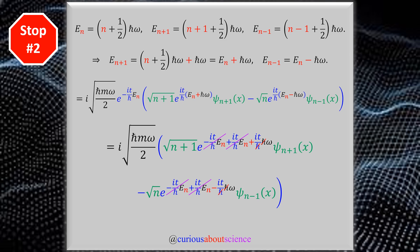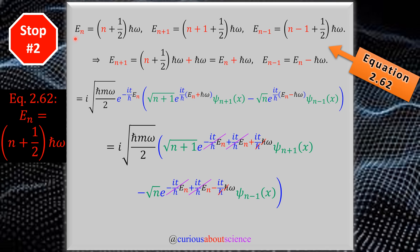Stop number two: we can now utilize the energy formula to simplify the transformation equation. Going back to equation 2.62, which gave us the En energies, and then En+1, all we had to do is put an n+1 here and an n-1 here. Noticing that this ℏω can be distributed to this one and this minus one, you get the n+1/2 back on both. You see very quickly that it turns into En plus ℏω and En minus ℏω.